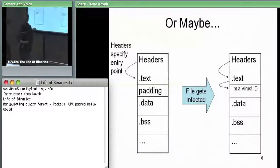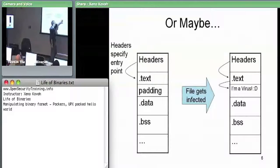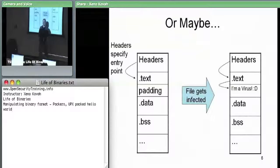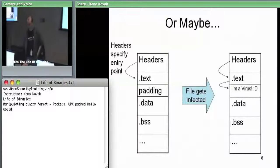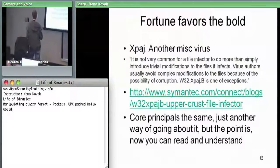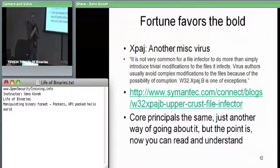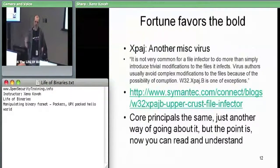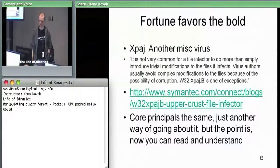This second virus takes a random location into the binary, picks that random location, and puts a jump there. It disassembles that code, figures out which code would have been there, copies those instructions to its own area, and inserts a jump to itself. The summary from Symantec says most viruses are simple in terms of what they modify, but this one injects itself at some random location, making fairly complex modifications.